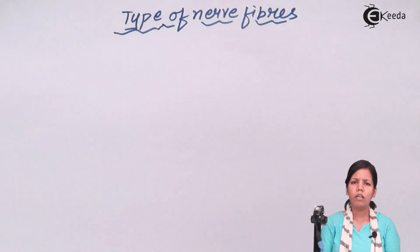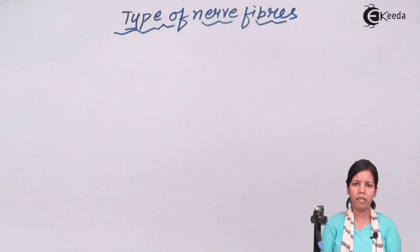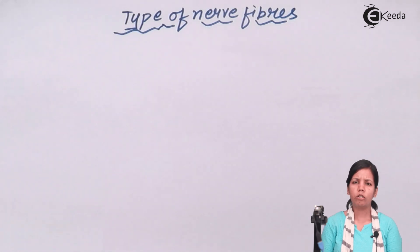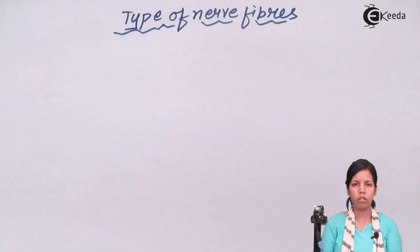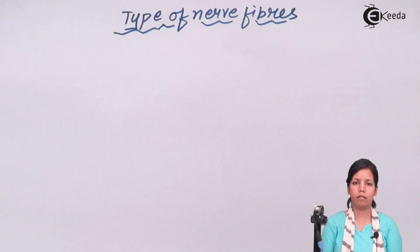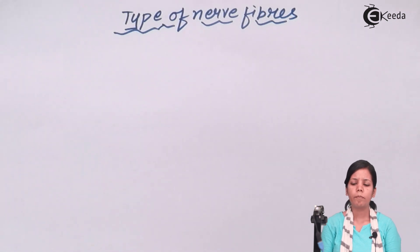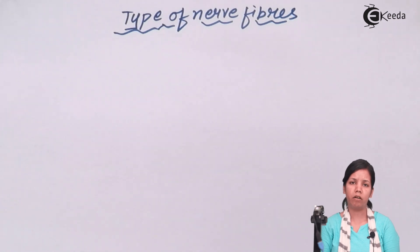Nerve fibers are a very crucial and prominent part of your neuron. There could be only two types of nerve fibers present, depending upon whether they contain a myelin sheath or there is an absence of myelin sheath. You can also refer to nerve fibers as axons. So the two types are: myelinated or medullated nerve fiber, and non-myelinated or non-medullated nerve fiber.